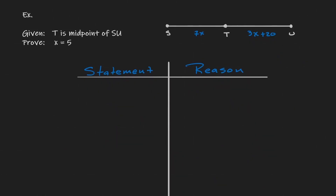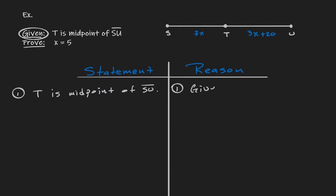Let's take a look at our first example. Anytime you're dealing with proofs, you want to understand what you're given and what you want to prove. In this case, we are given that T is the midpoint of line segment SU, and what we want to show is that X has a value of 5. The first thing you always want to do in a statement-and-reason table is write down the given. So let's do that: T is the midpoint of SU. That's always the first step.